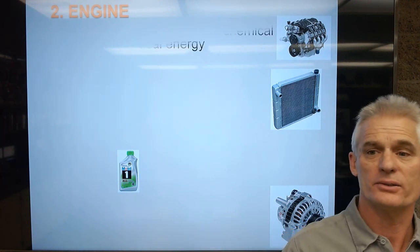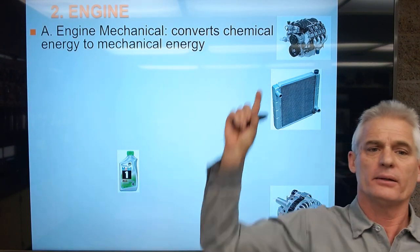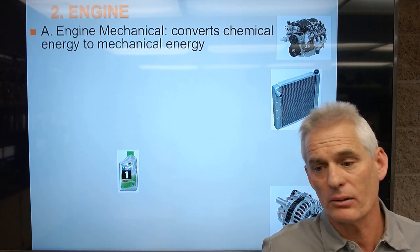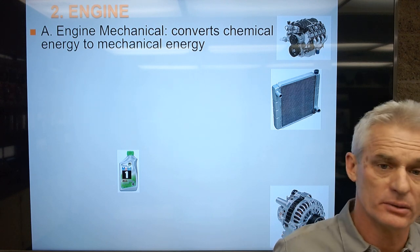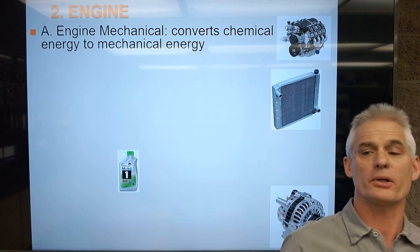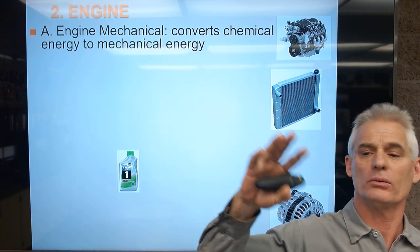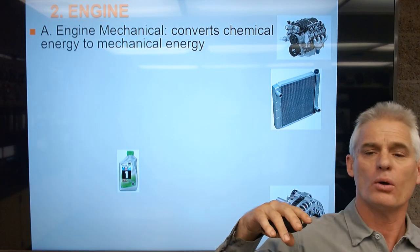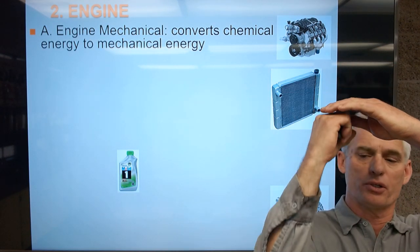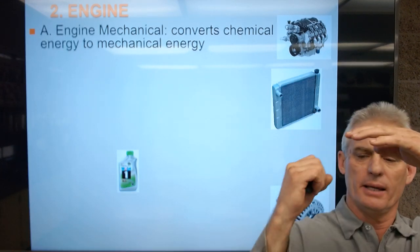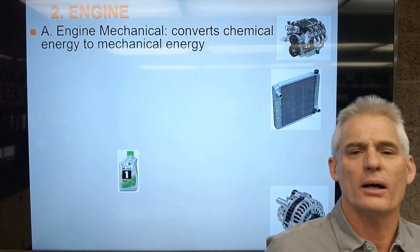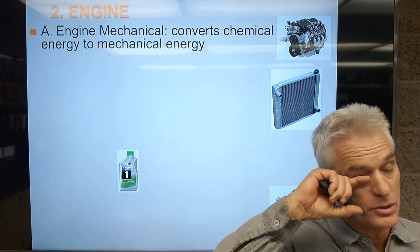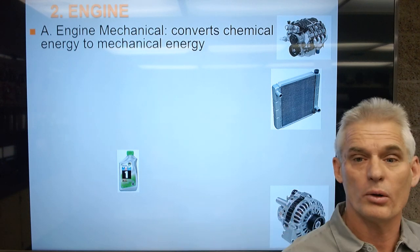The second major group on the vehicle is the engine. This Chevrolet V8 behind me is a mechanical device that takes chemical energy — gasoline and air, or diesel and air — and turns it into mechanical energy. The whole goal is to explode air and fuel, push a piston down, and spin a crankshaft. We'll talk about all of that in more detail later.